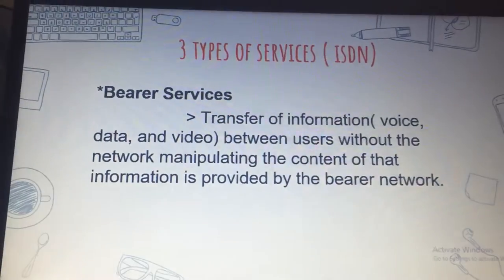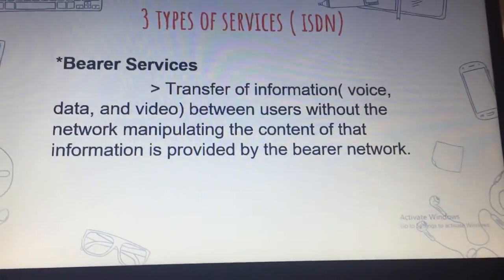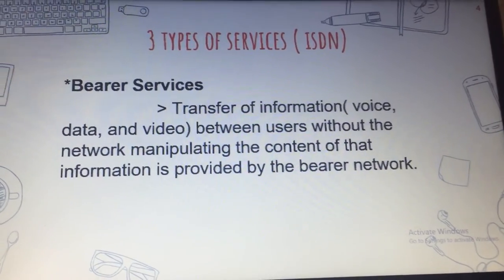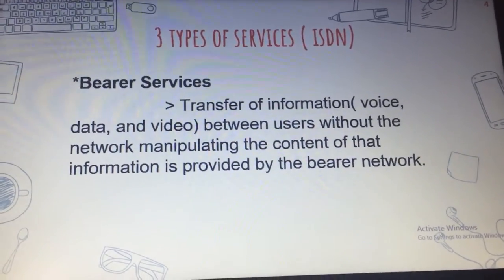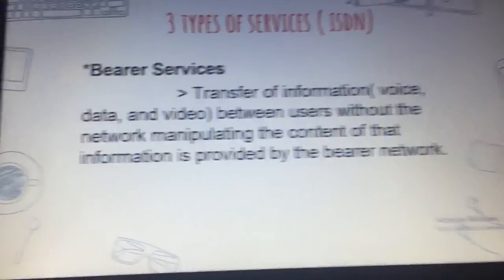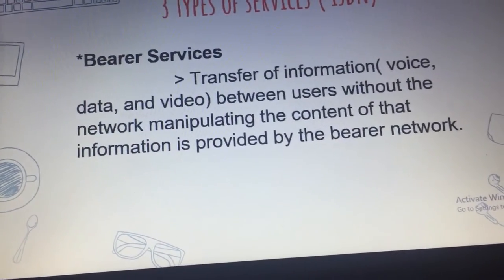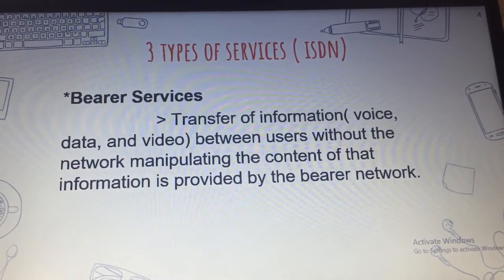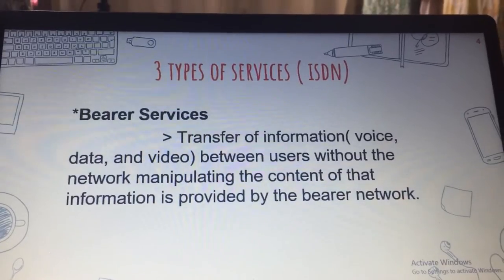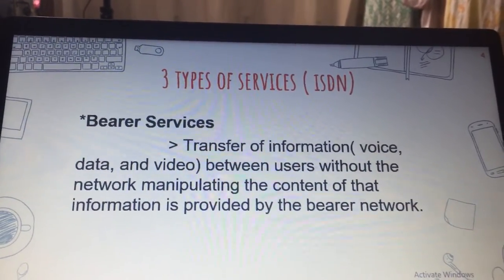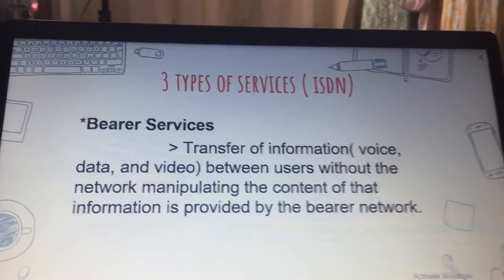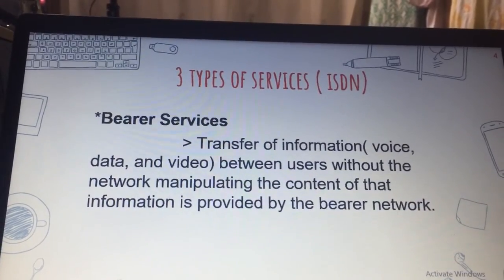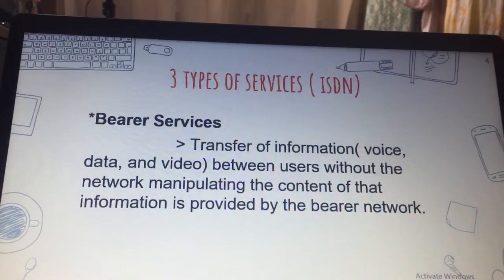Next are the three types of services of ISDN. The first is bearer services. Transfer of information — voice, data, and video — between users, without the network manipulating the content of that information, is provided by the bearer network. There is no need for the network to process the information, and therefore it does not change the content. Bearer services belong to the first three layers of the OSI model, and they can be provided using circuit switch, packet switch, and frame switch or cell switch networks.